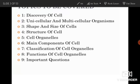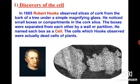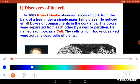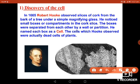Let us begin with the first topic in this chapter: discovery of the cell. The discovery of the cell was a very minute finding but it proved to be very important in the history of science. It was discovered by Robert Hooke in the year 1665.